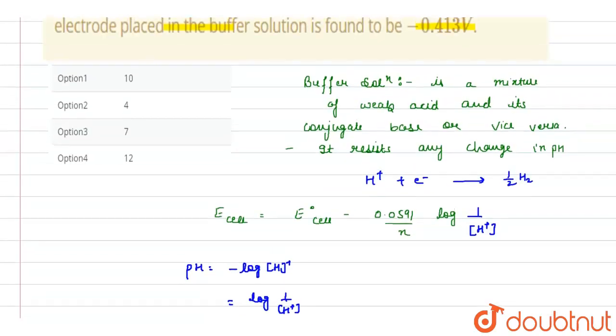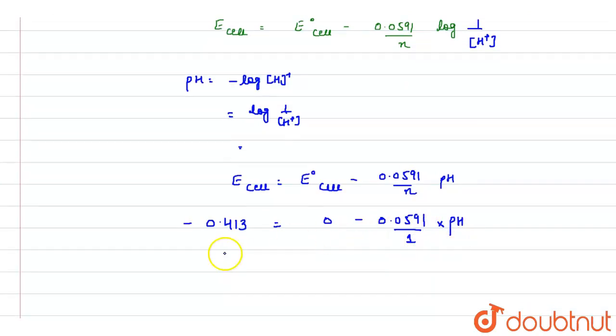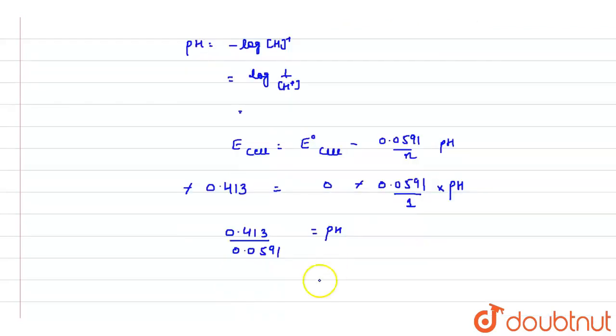Minus 0.413 equals minus 0.0591 upon 1 times pH. These minus get cancelled, and this will be 0.413 upon 0.0591 is equals to pH. When we solve this, it comes out to be 6.96.